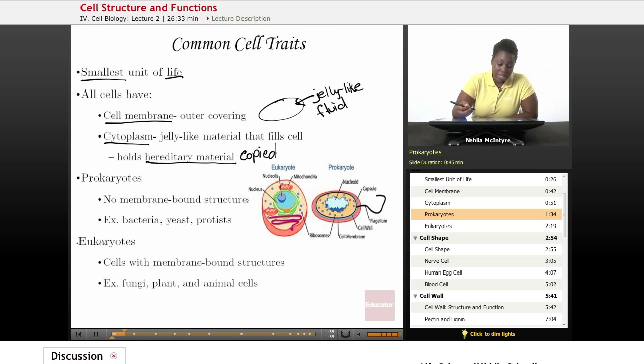Now there's two types of cells. There's prokaryotes and there's eukaryotes. Prokaryotes, the difference between the two are that the prokaryotes do not have membrane-bound structures, meaning anything that is in a prokaryotic cell is free-floating, and does not have a membrane.